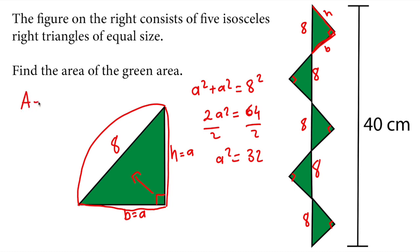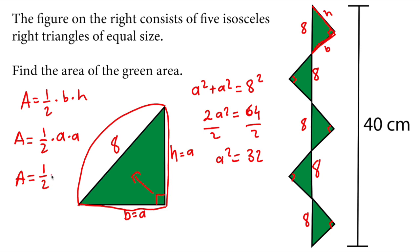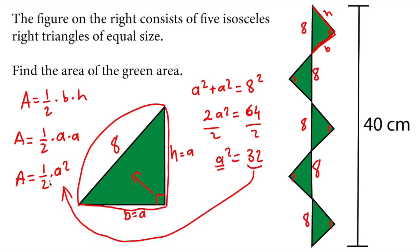The area formula is: area = ½ × base × height. In our case, base and height are the same values — A times A — which means A². So the area equals ½ × A². I know A² = 32, so plugging that in: area = ½ × 32 = 16. So the area of one triangle is 16 square centimeters.